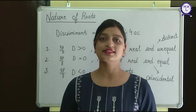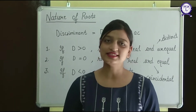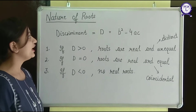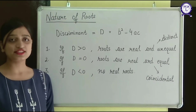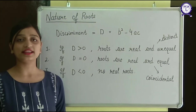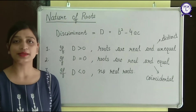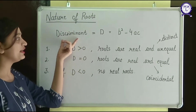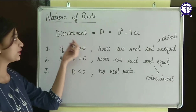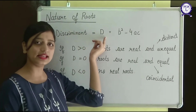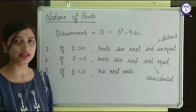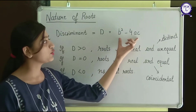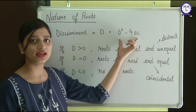Today's topic is nature of roots. Now, in this topic, we need to find a thing called discriminant. This is the discriminant and it is denoted by capital D. What is this discriminant? This discriminant is b squared minus 4ac.